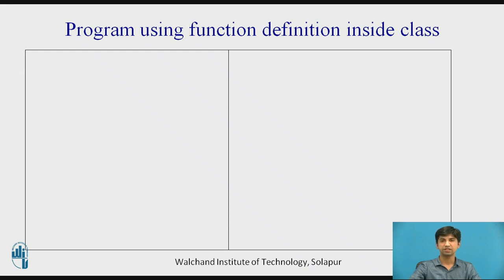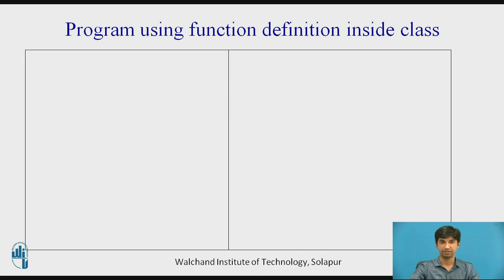We will be discussing how to write a program. What do we mean by function definition inside the class? It means you are defining what the function is performing and how it is executing — all within the class. A class is a collection of different data members and member functions into a single unit, and the instances of the class are called objects. Whenever you write a program in C or C++, it includes different header files and preprocessor directives.